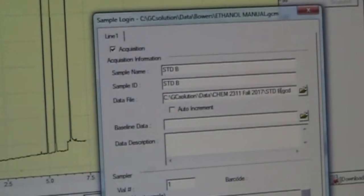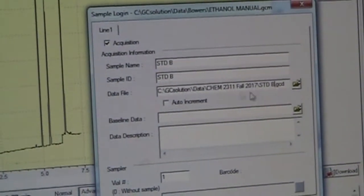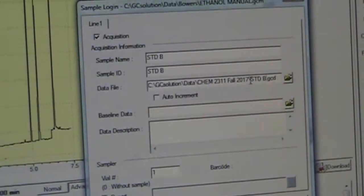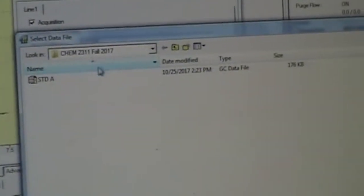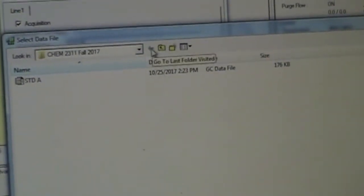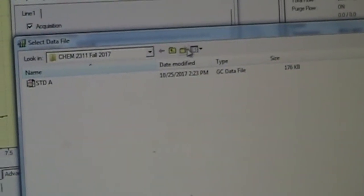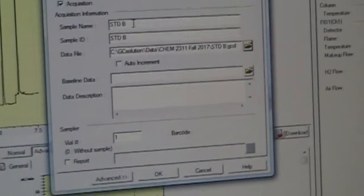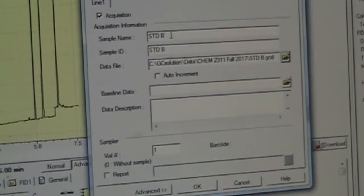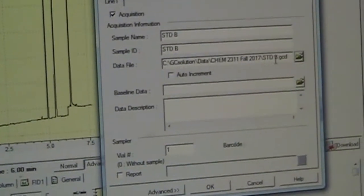So there will be a CHEM2311 folder for the appropriate semester. If you aren't in that folder, you can navigate to that. You can always click on the folder button and find your way around the tree. CHEM2311, in this case Fall 2017, is where I want to, and I'm just going to name the Standard A as the file name.